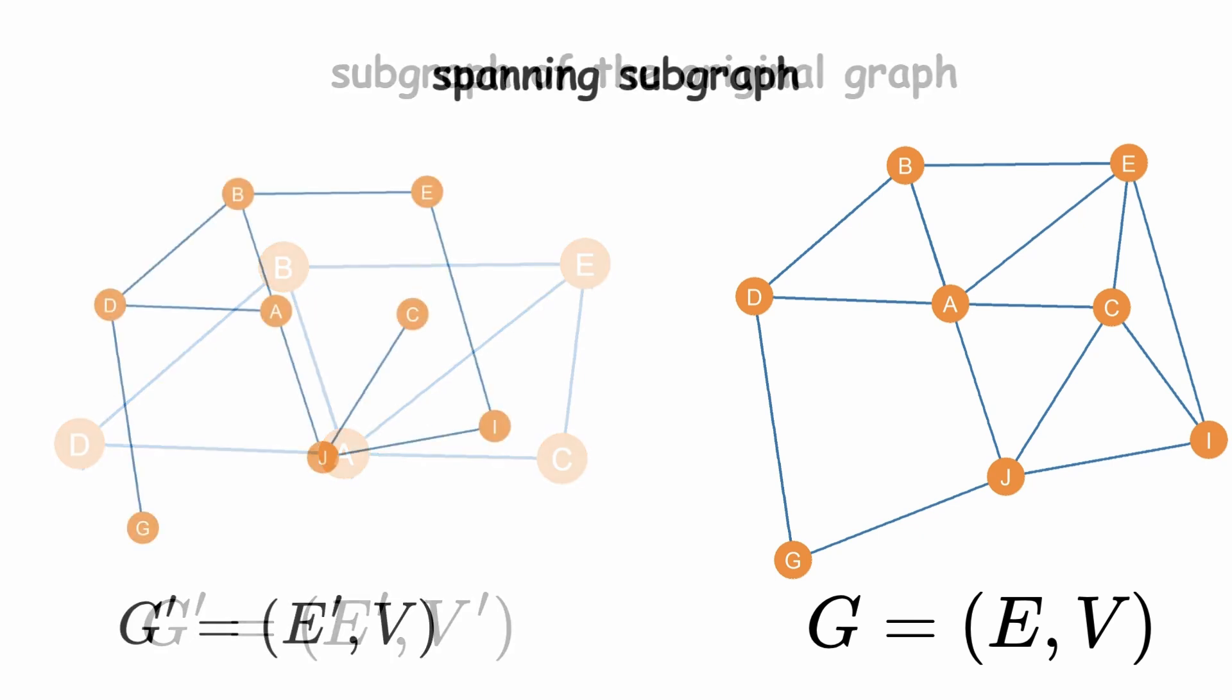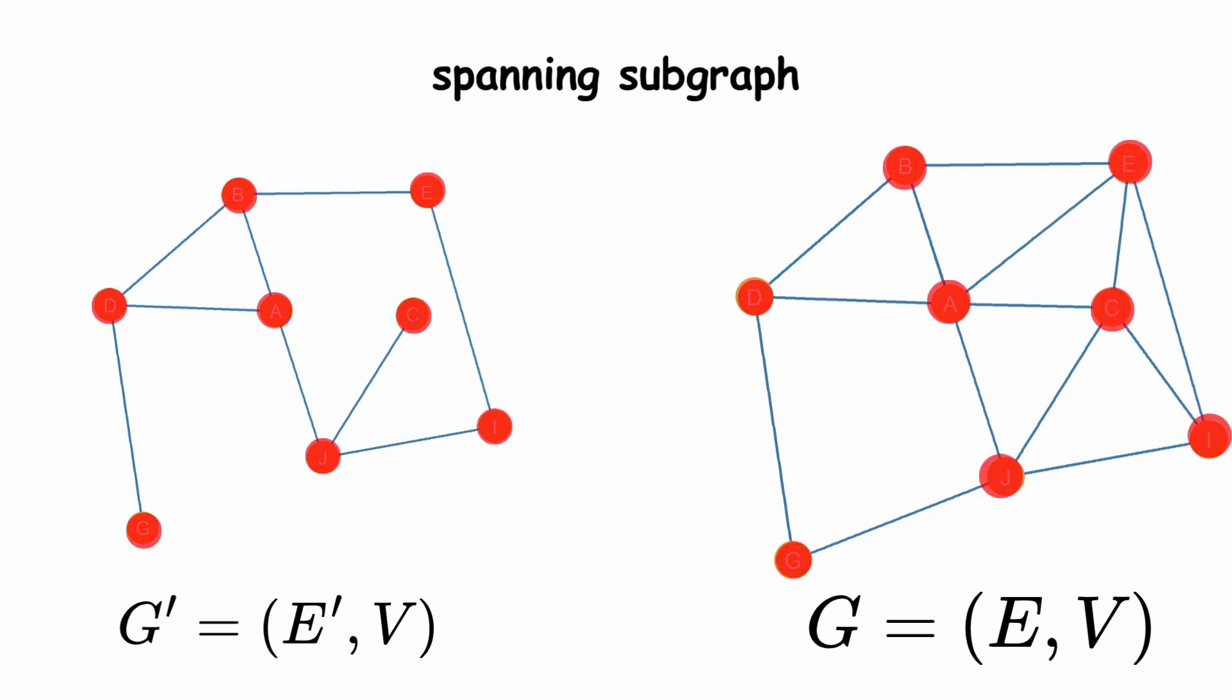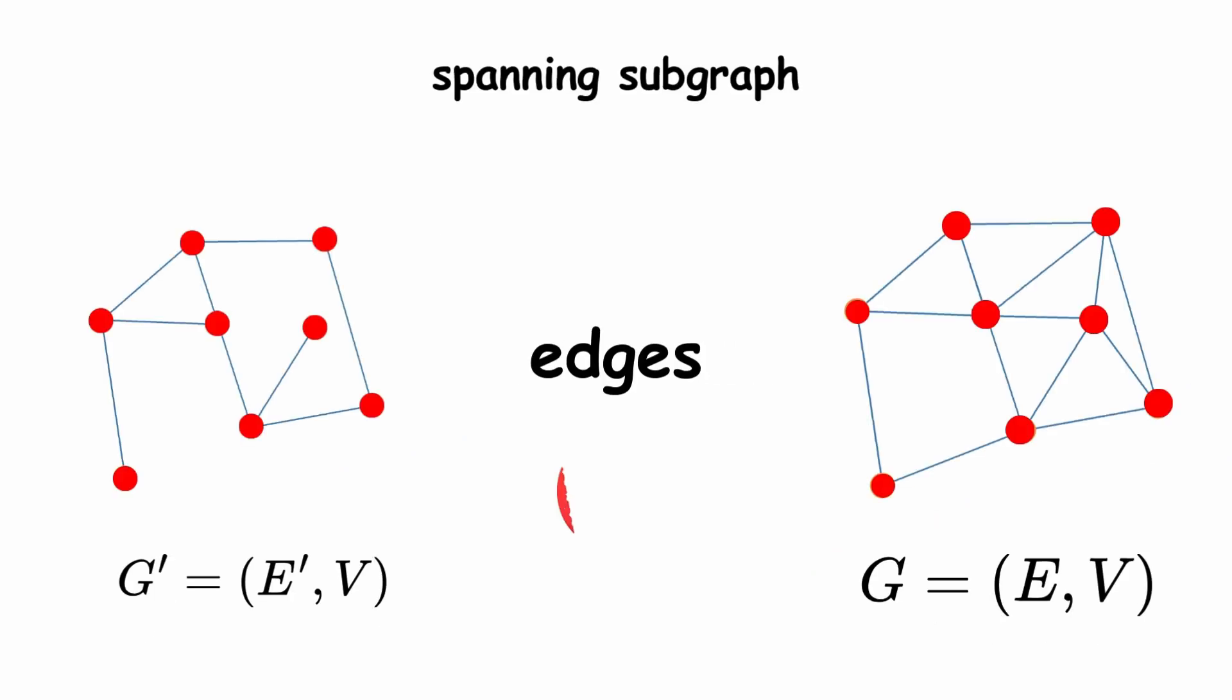A subgraph is called a spanning subgraph if it contains all the vertices of the original graph, because it spans over all of those vertices. However, it does not have to contain all the edges of the original graph.